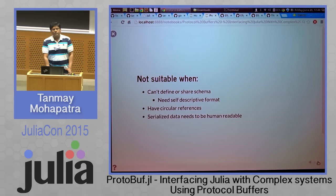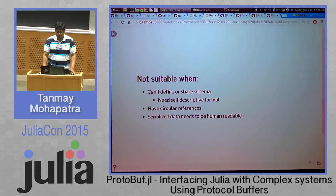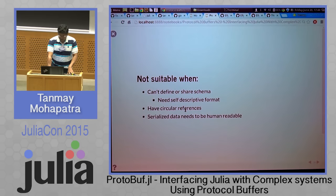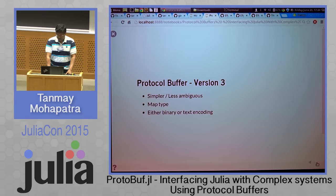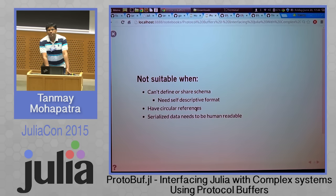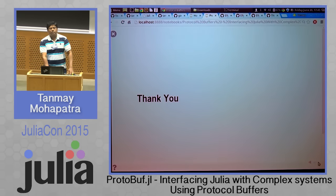Protobuf is not always suitable for all purposes. If a schema cannot be defined — that is, it's a loose format — then we cannot use protobuf, and we need something self-descriptive. We cannot have circular references. And if we need the serialized data to be human readable, this produces binary, so it's not suitable. However, there is a new version of the specification coming up — version 3 — which promises to be simpler and less ambiguous. It will have a map type which can be used to address ad hoc data types, and it can produce either binary or text encoding, so it can potentially be human readable. That's all for me now — any questions?